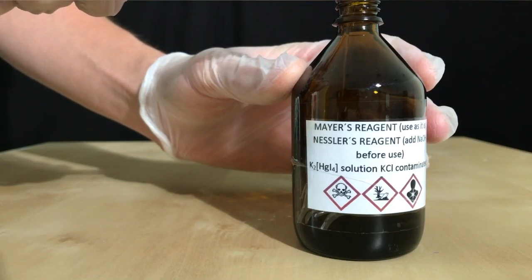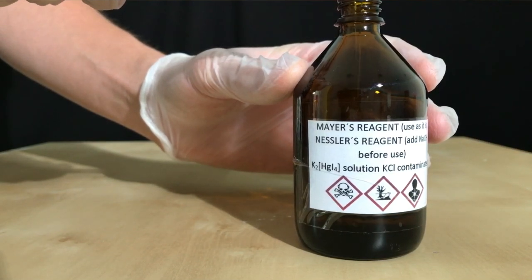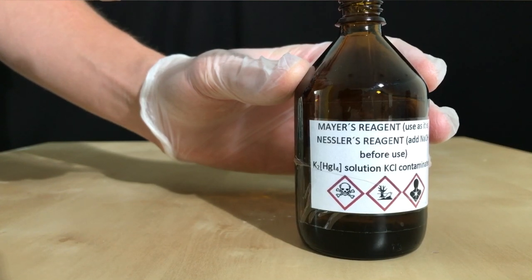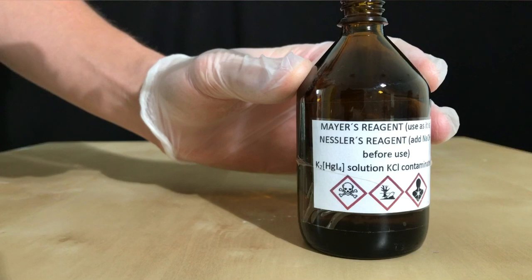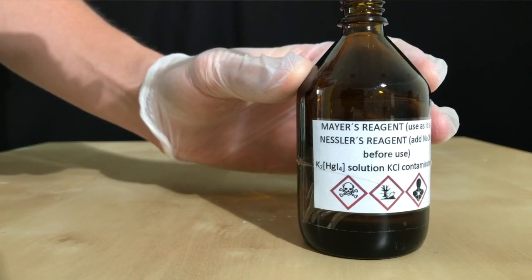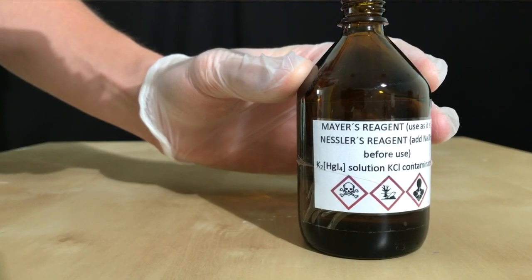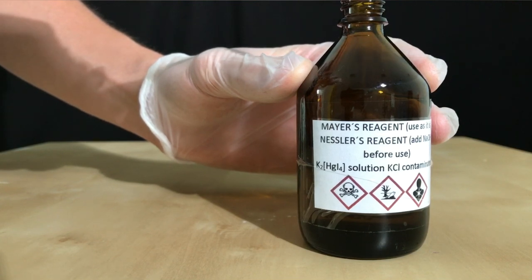If you want to use it as Mayer's reagent which is used to test for alkaloids, the solution should be used as is or in a slightly acidic environment. If you want to use it as Nestler's reagent which is used to test for ammonium ions, some sodium hydroxide may be added to whatever you want to test beforehand because Nestler's reagent needs an alkaline environment.